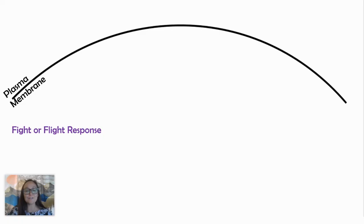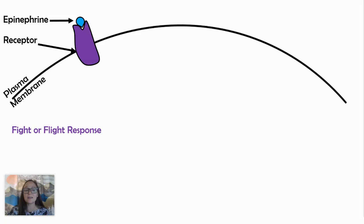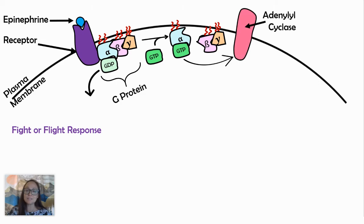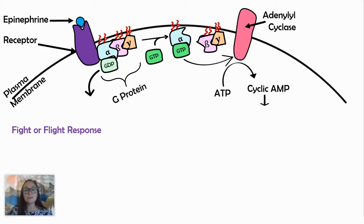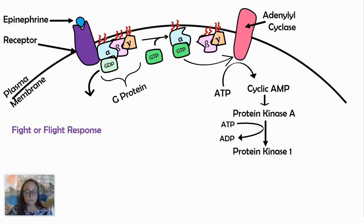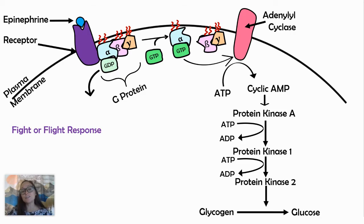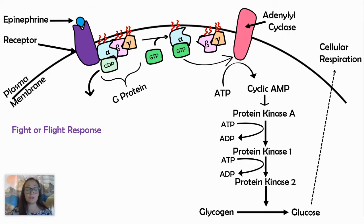When we look at the fight or flight response — how that first messenger or ligand, epinephrine, brings about a final cell response — it comes down to a series of proteins inside the cell working together to complete that phosphorylation cascade and amplify the signal within the cell. This is an example of a liver cell where glycogen will be broken down into individual glucose molecules to make ATP in that fight or flight response.